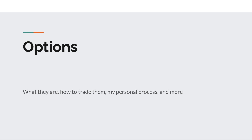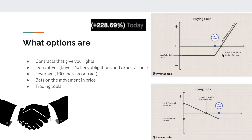We're going to talk about what options are, how you can trade them, my personal process, and more. To start simply: options are just contracts that give you rights. Buyer A comes to seller B and says, 'In two weeks, I want the right to buy this asset at this certain price, regardless of the current market price in two weeks.' Seller B, who doesn't think that's likely, agrees and gives that contract.